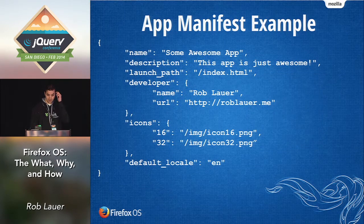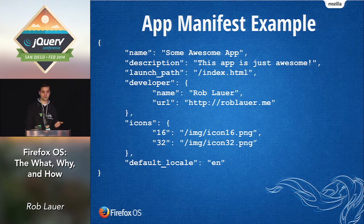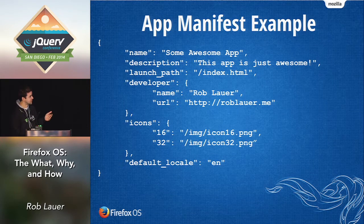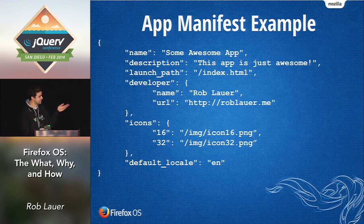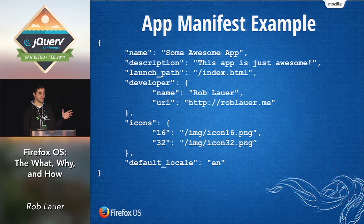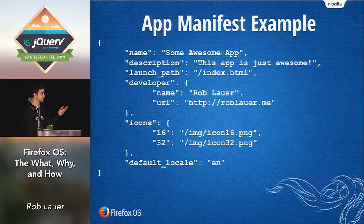As promised, here's what an app manifest file looks like — it's required for every Firefox OS app. It's a JSON-formatted file containing metadata: a name, a description, a launch path to your root document, basic developer information, a list of icons, and a default language. That's all you need to run a Firefox OS app. You can take your HTML5 app, add this file to it, and it becomes installable on the device as a hosted app.